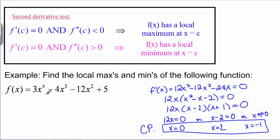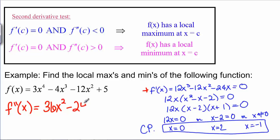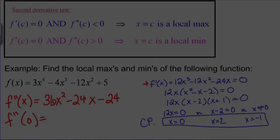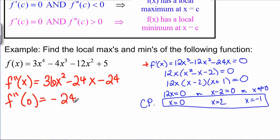This is an example we did in a previous video. We used the first derivative test to find the local maxes and mins, so let's try it with the second derivative test. We've already taken the first derivative, factored it, and found the critical points to be zero, two, and negative one. The second derivative F double prime of X is 36X squared minus 24X minus 24. F double prime of zero is negative 24 — a negative second derivative means X equals zero is a local max.